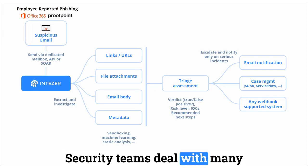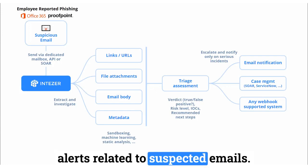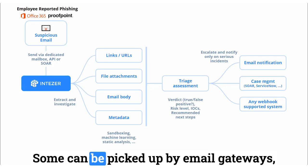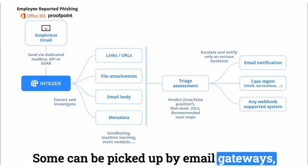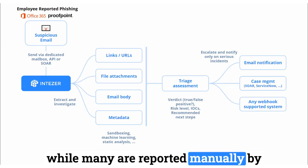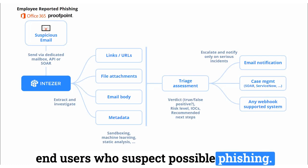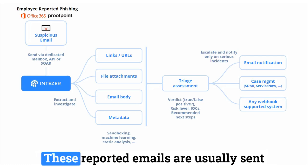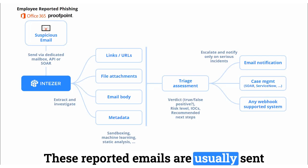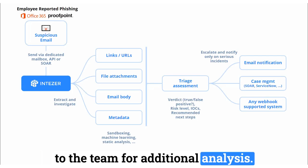Security teams deal with many alerts related to suspected emails. Some can be picked up by email gateways, while many are reported manually by end users who suspect possible phishing. These reported emails are usually sent to the team for additional analysis.